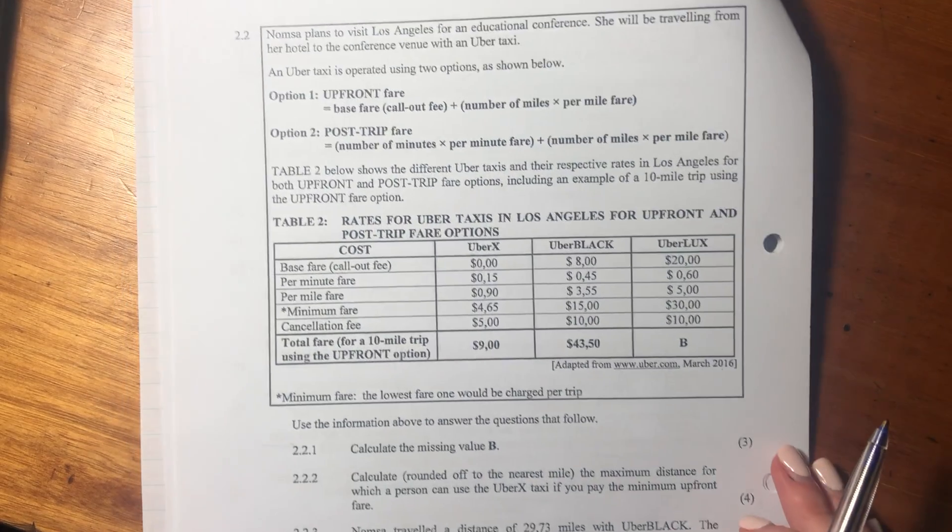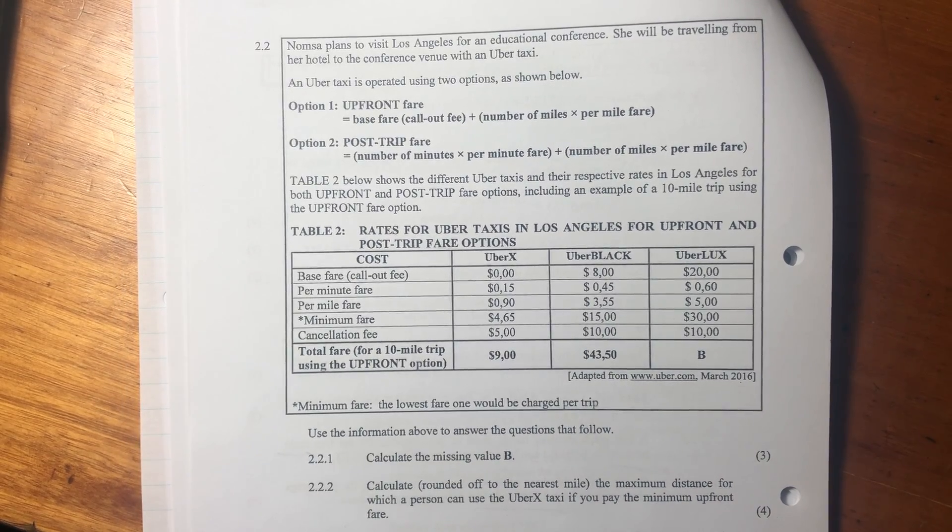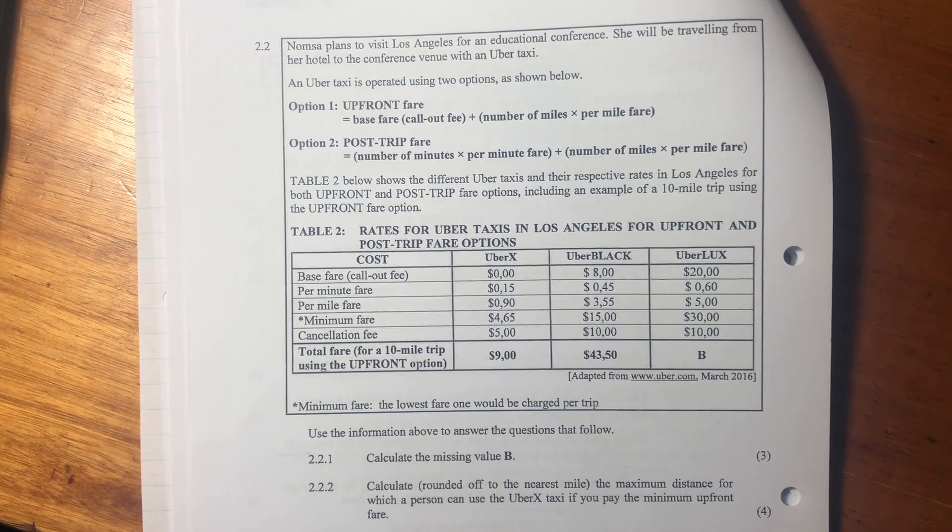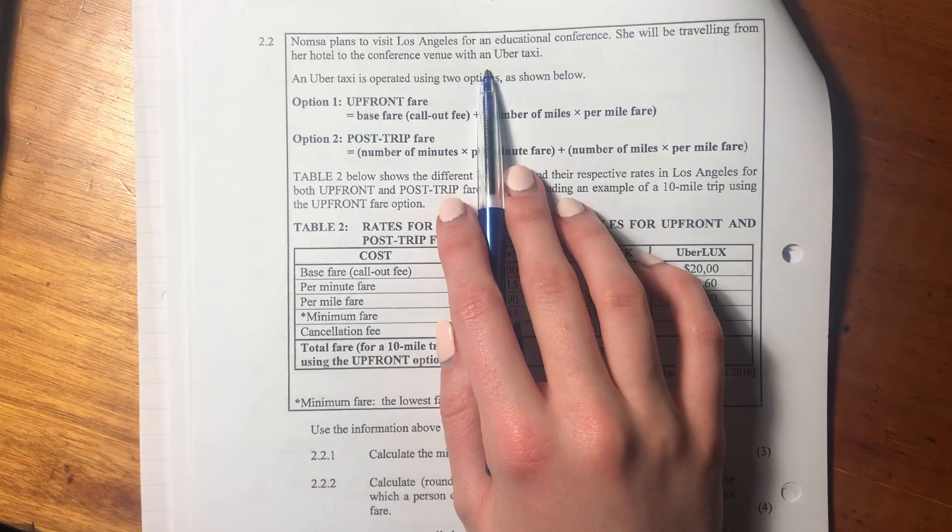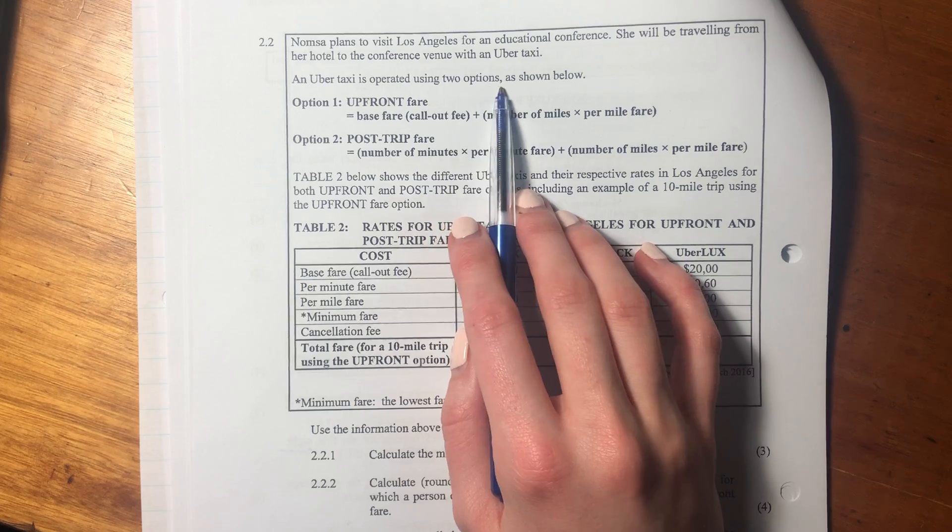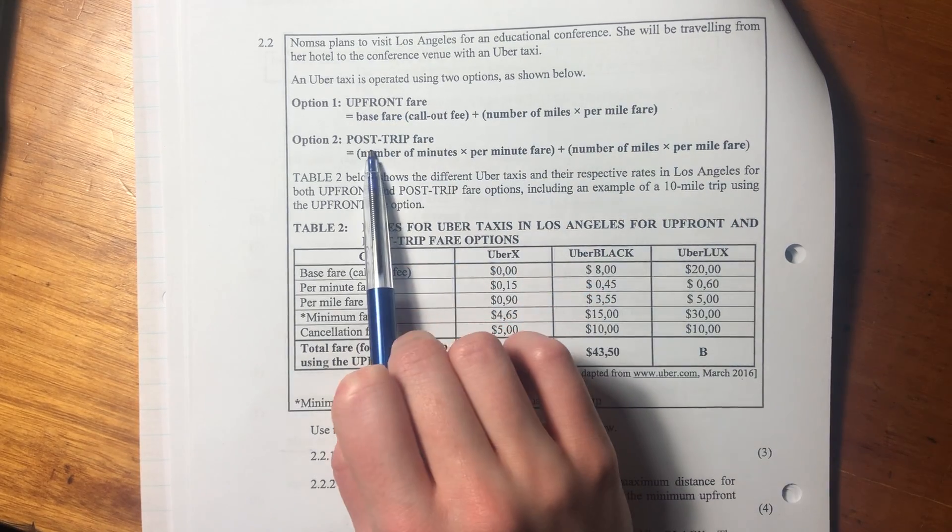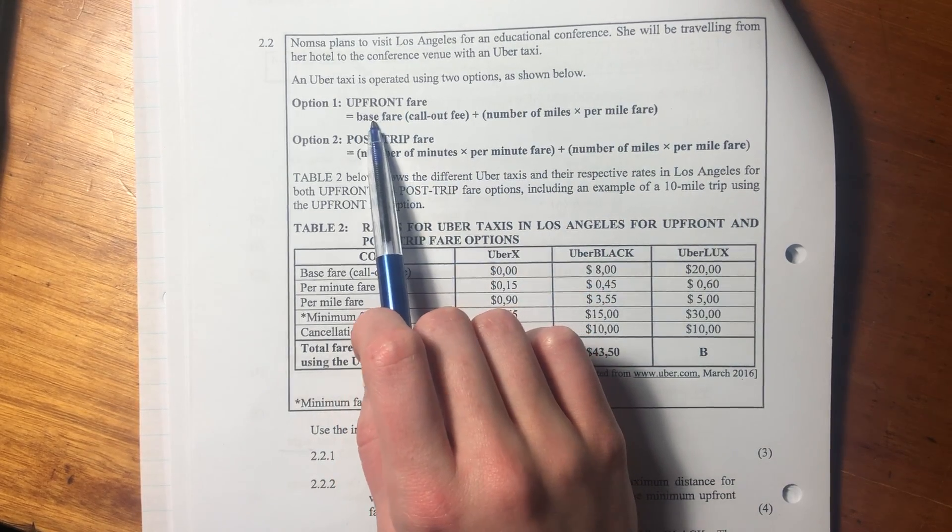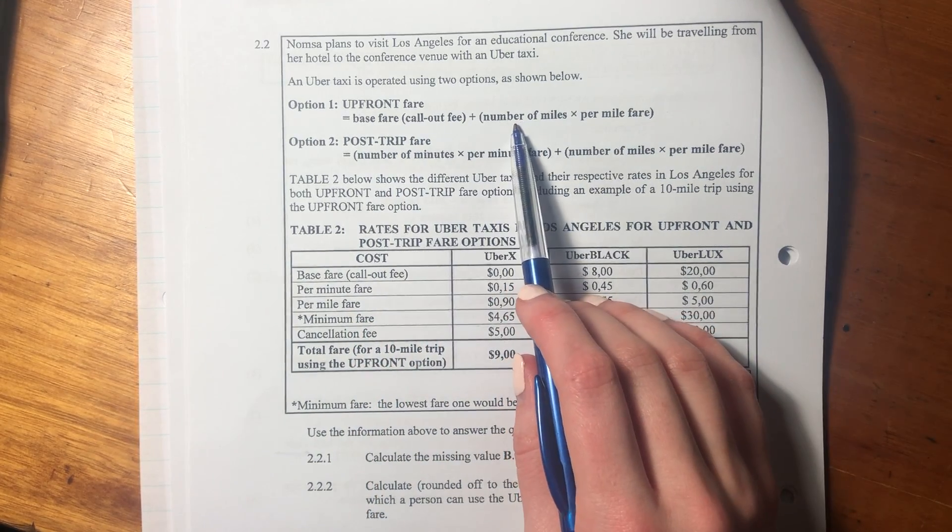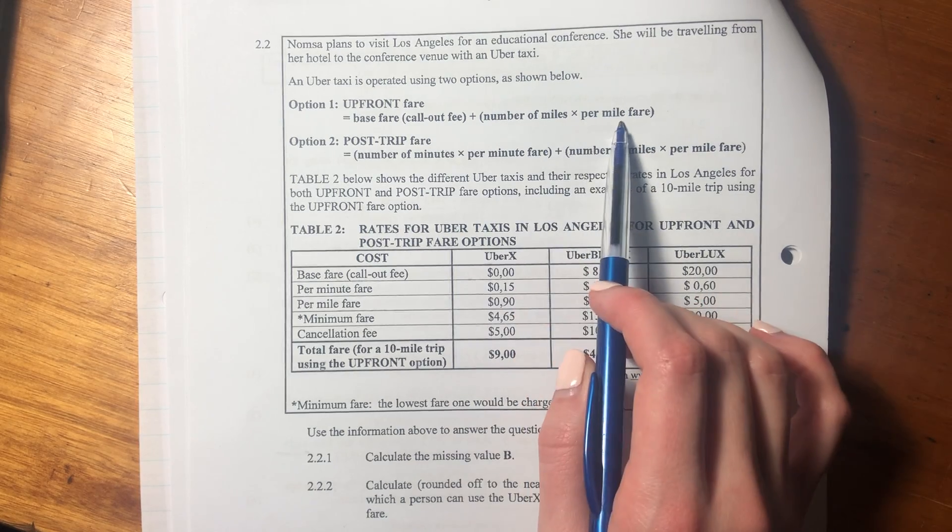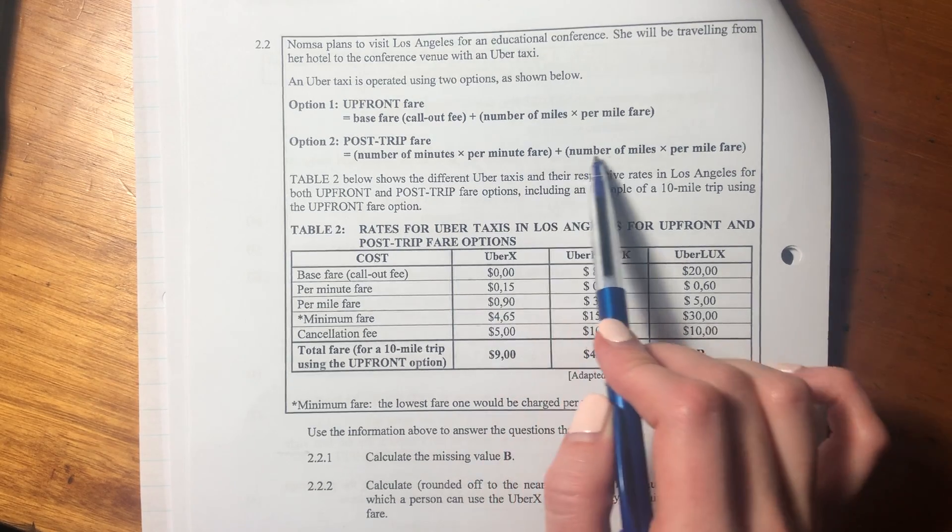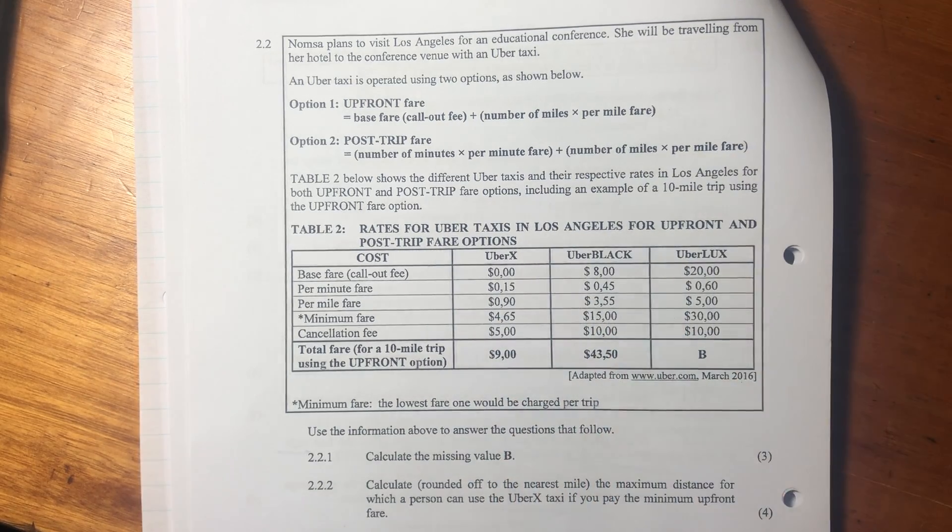Hey guys, so we're moving on to 2.2. It says Normsa plans to visit Los Angeles for an educational conference. She will be traveling from her hotel to the conference venue with an UberX. An Uber taxi is operating using two options as shown below.